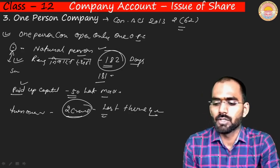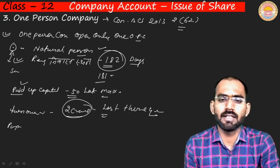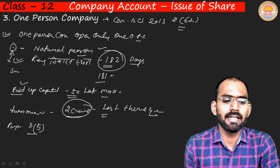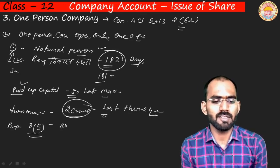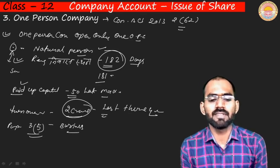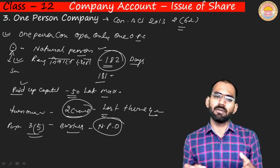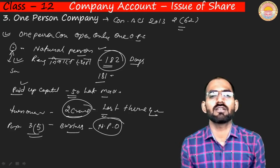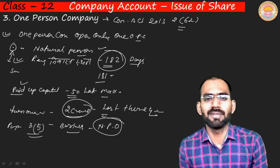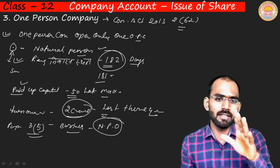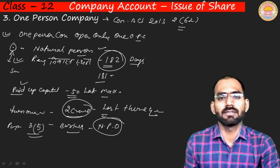Regarding purpose: as per Companies Act 2013, Section 3(5), the main objective of an OPC must be a business motive only — an NPO or NGO cannot operate as an OPC. You must be involved in economic or business activity. The company must engage in business processes and services — charitable purposes are not allowed.